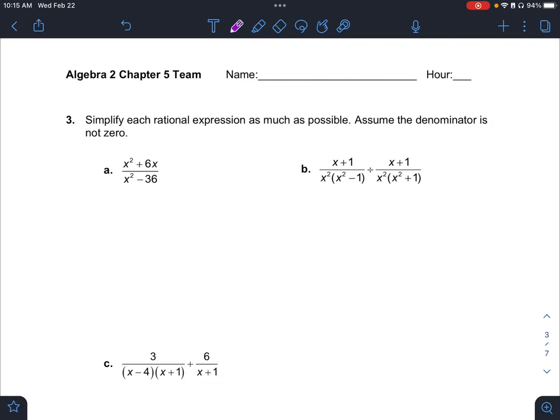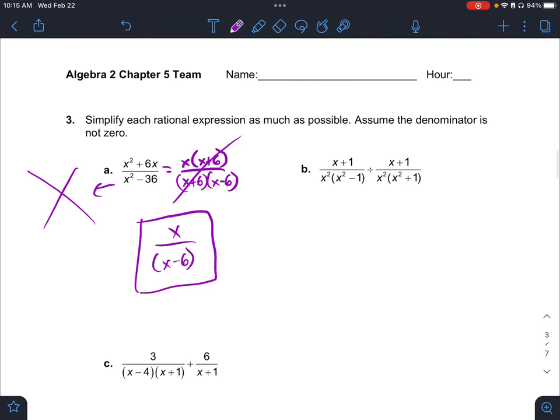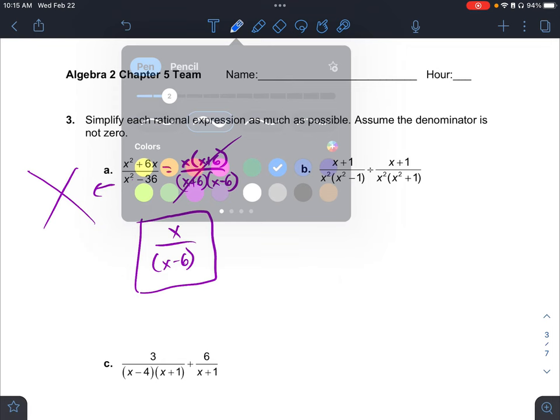First one is just simplifying. I can pull out an x on top. It leaves me x plus 6. That's a GCF. This one factors as well. You can do the big x if you want. This is the difference of perfect squares. x plus 6, x minus 6. x plus 6 cancel. And I get x over x minus 6.